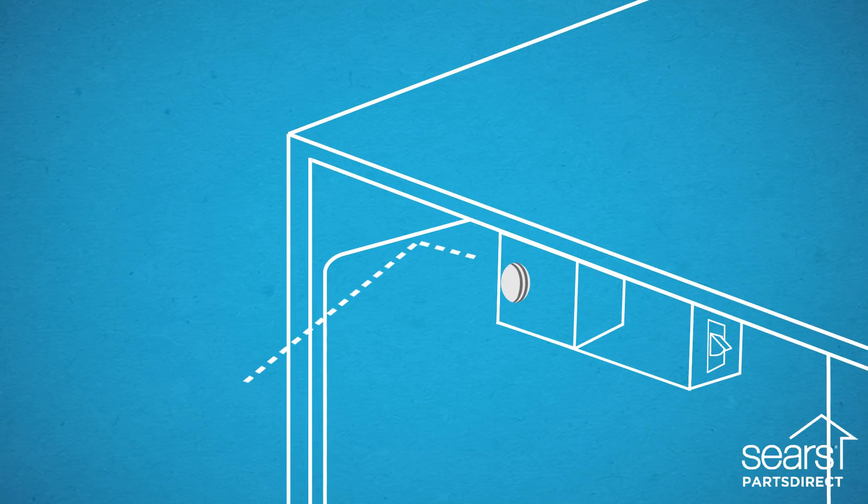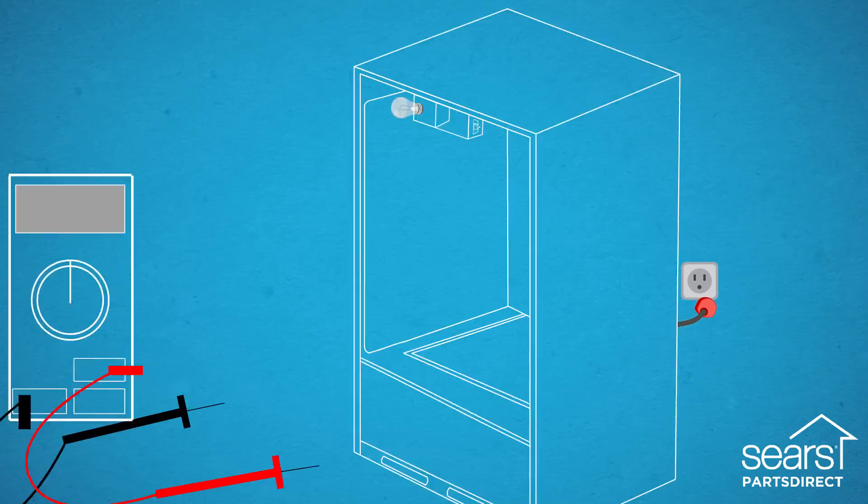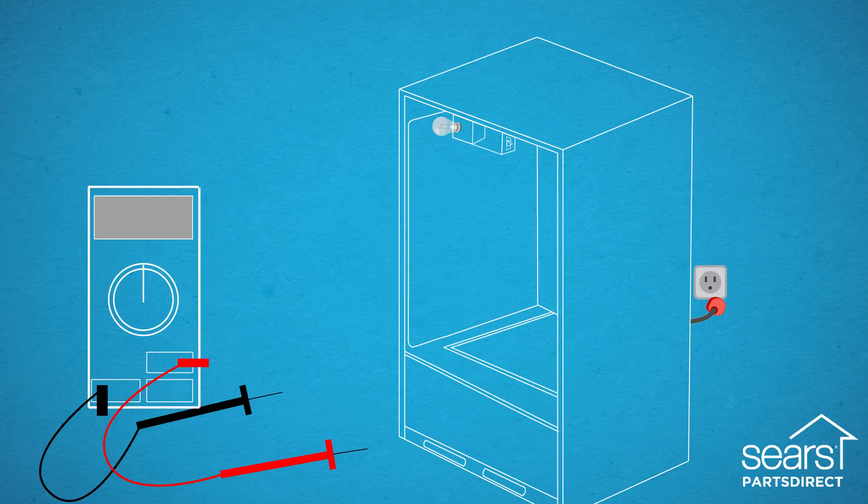Let's say the refrigerator light won't work and you already replaced the light bulb. Begin by unplugging the fridge and checking the light switch for continuity using a multimeter.